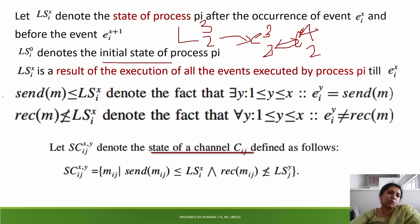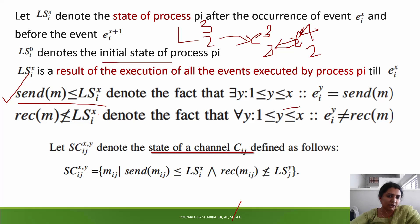We have two rules. The first rule: Send(m) is less than or equal to LSix — meaning to send a message from a local state, that send event must be recorded in the local state.